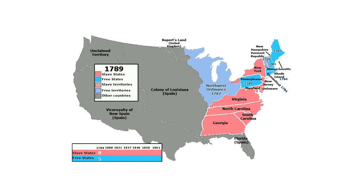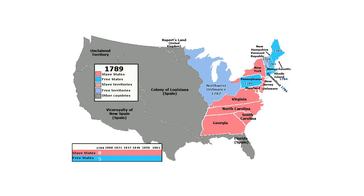The South produced something like two-thirds of the world's cotton and was making lots of money. The North was complicit in this — they were insuring the slaves and serving as bankers, so the North was definitely involved in slavery too. You can see this divide taking place by 1800.